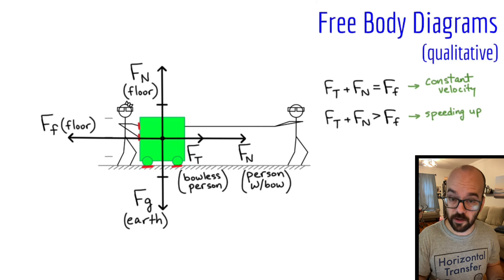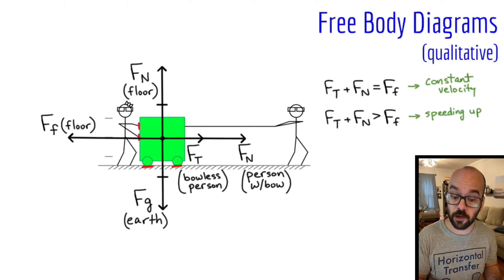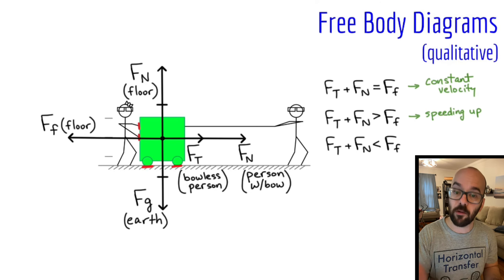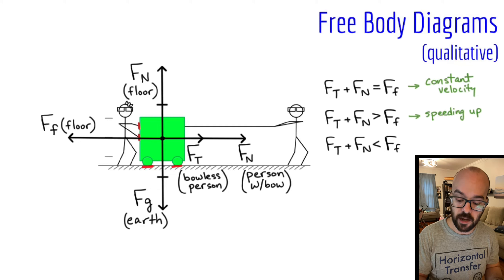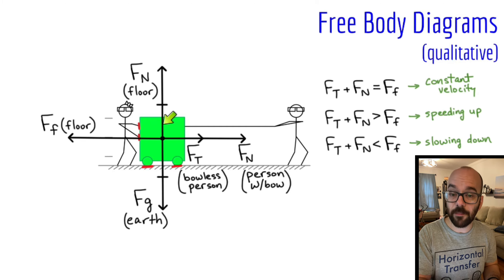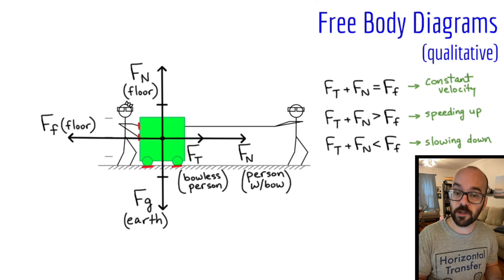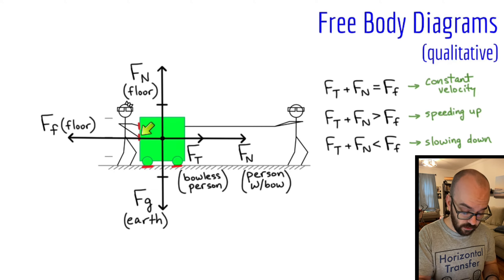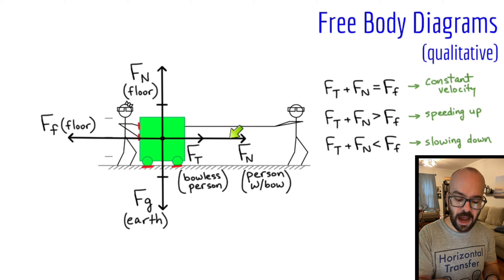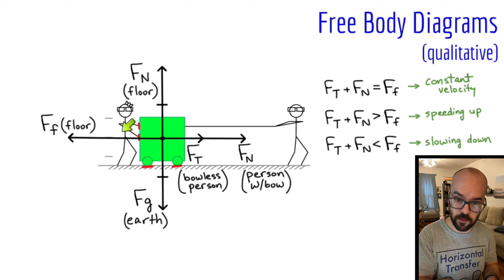Finally, what if the forces the people are exerting on the cart are less than the force of friction? They're not applying enough force to overcome the friction. Well, the leftward force of friction is greater than the rightward forces, so this object is going to be slowing down. To recap: if horizontal forces are balanced, the object has constant velocity. If there's a greater rightward force and the object is moving to the right, it speeds up. If there's a greater leftward force but the object is moving to the right, then the object slows down.